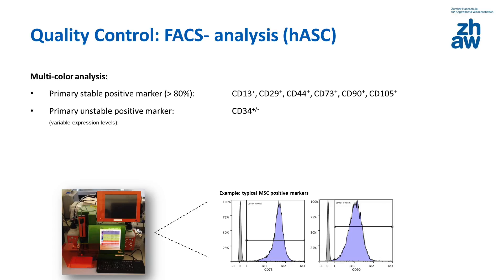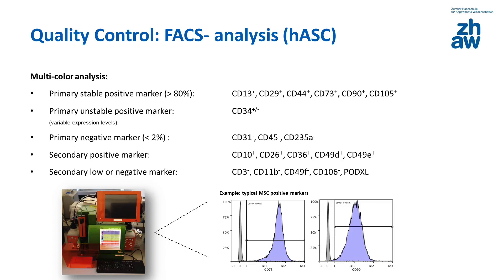The primary positive surface markers for mesenchymal stem cells involve CD13, CD29, CD44, CD73, CD90, and CD105. More than 80% of the cell population should be positive for these markers. The primary negative markers are CD31, CD45, and CD235. The percentage of positive cells for these negative markers should be below 2%; if higher, this indicates changes in the cell population.